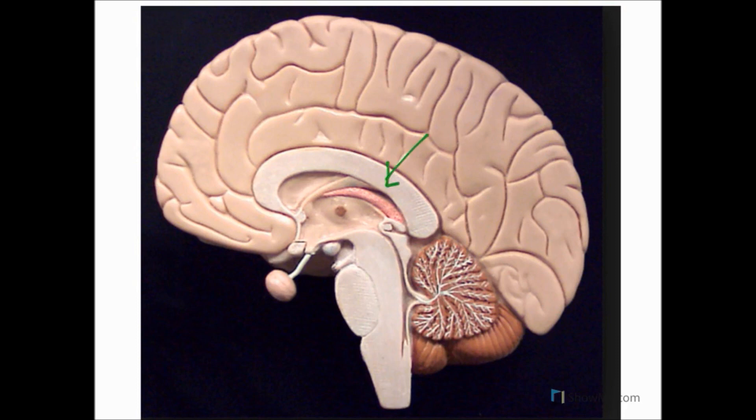So to begin with, we're just going to mark out some structures here for orientation which I hope you know already. Here we have the corpus callosum. In here we have the cerebellum. Here we have the cerebral cortex.